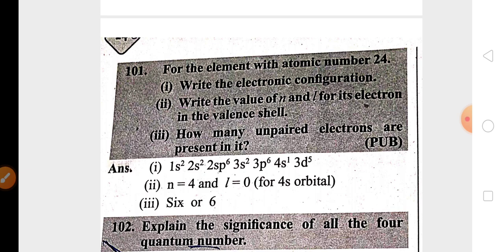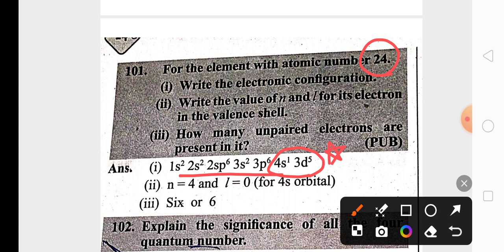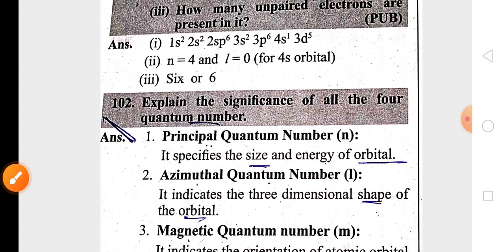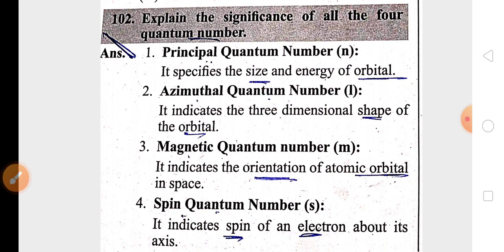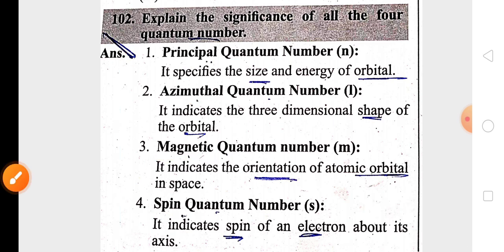They will give an atomic number — especially atomic number 24 (chromium) and 29 (copper) — and you need to write the electronic configuration, noting exceptional configurations. You may be asked to find the valence shell (4), and in that valence shell the last electron enters the s orbital whose azimuthal quantum number value is 0, and the number of unpaired electrons. The significance of the four quantum numbers — principal, azimuthal, magnetic, and spin — is highly important.